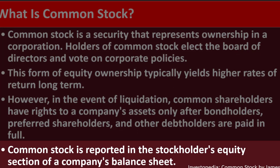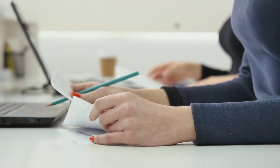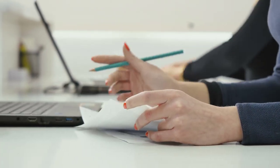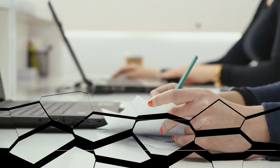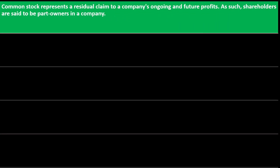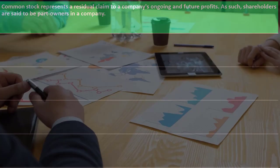Common stock is reported in the stockholders' equity section of the company's balance sheet. A balance sheet is similar to a personal balance sheet: assets minus liabilities equals equity, which you can think of as net assets. Common stock represents a residual claim to a company's ongoing and future profits — shareholders are part owners of the company.